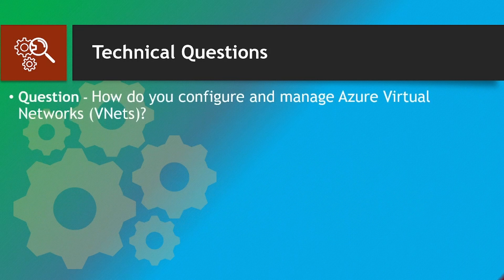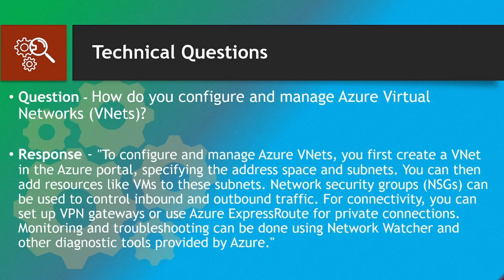How do you configure and manage Azure Virtual Networks? To configure and manage Azure VNets, you first create a VNet in the Azure portal, specifying the address space and subnets. You can then add resources like VMs to these subnets. Network Security Groups (NSGs) can be used to control inbound and outbound traffic. For connectivity, you can set up VPN gateways or use Azure ExpressRoute for private connections. Monitoring and troubleshooting can be done using Network Watcher and other diagnostic tools provided by Azure.